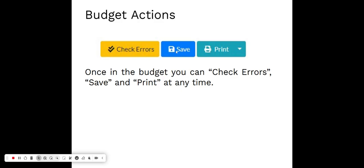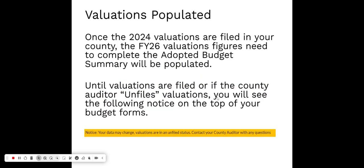Once you're in the budget, you can check for errors to make sure you're not missing a step. You can save — and we encourage you to do that quite often. You can also print at any time: either just the current page/tab you're working on, or the full budget.